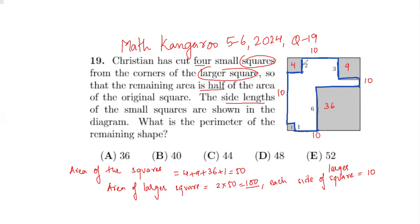Going around the shape: this side is 2, this is 2, this is 3, and this is 2, so this length will be 5. Then we have 3, 3, and 6, so this length is 1. This is 6, this is 1, so this length is 3 (because 10 minus 6 minus 1 is 3). And this is 2 and 1, so 10 minus 3 gives a 7.